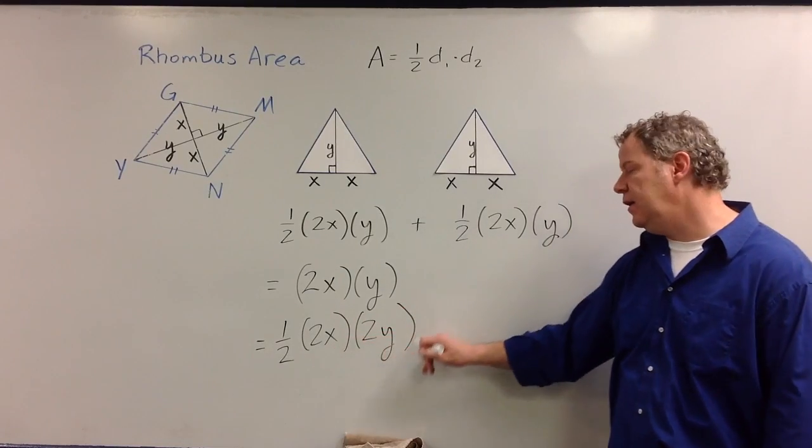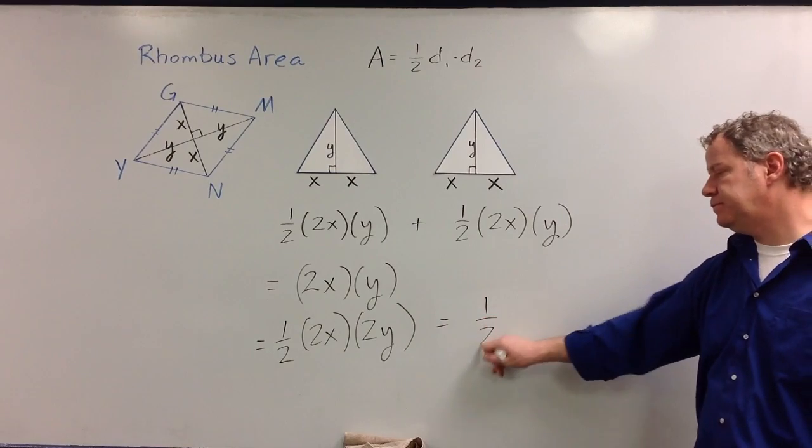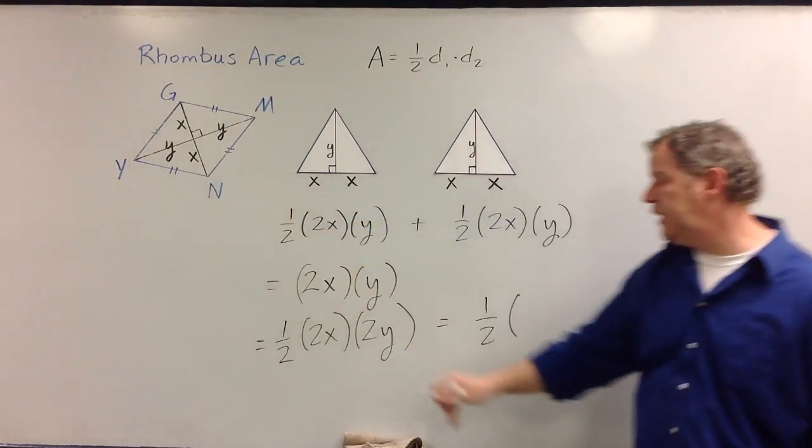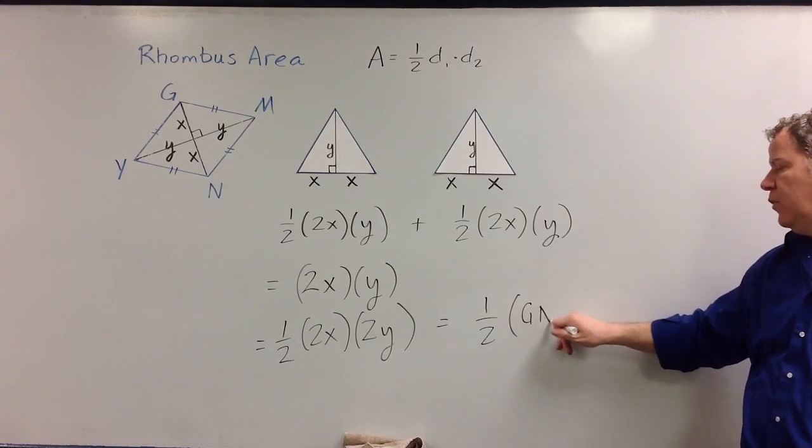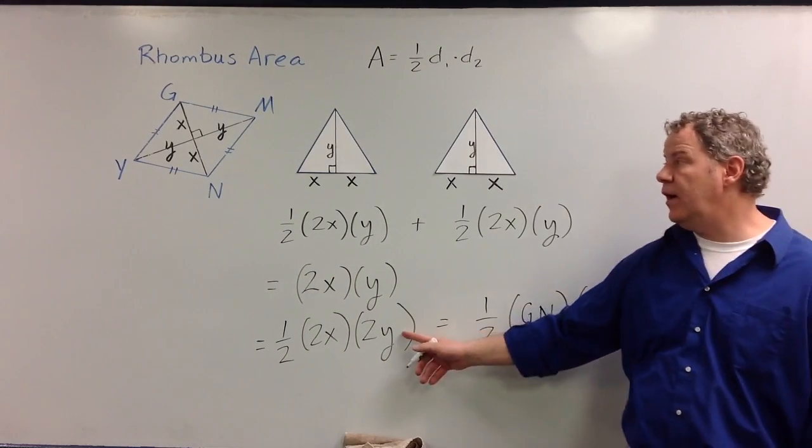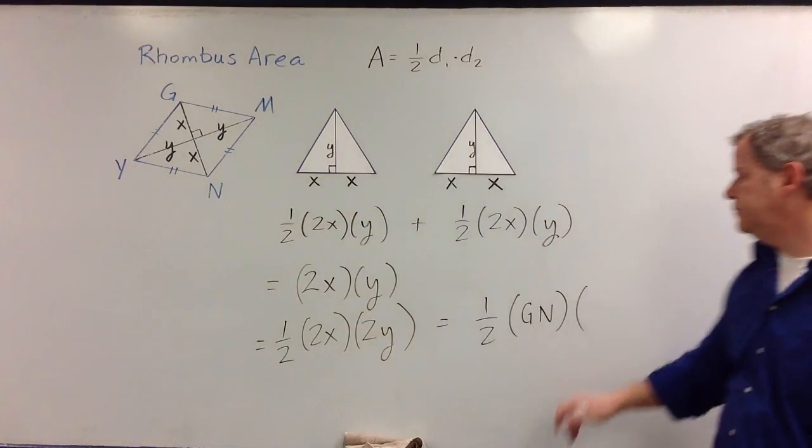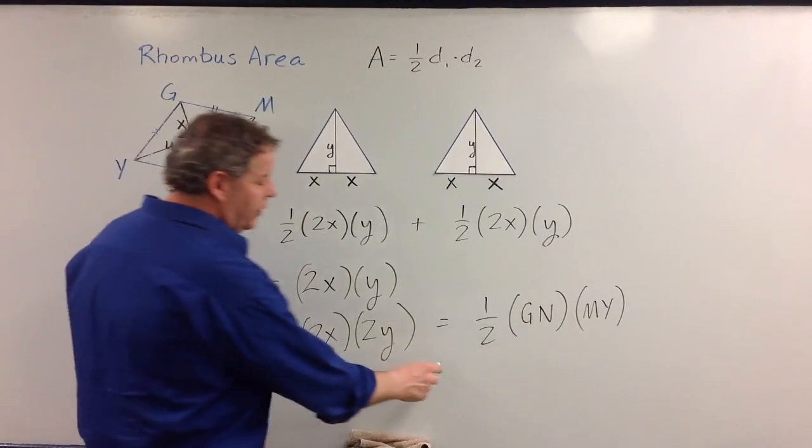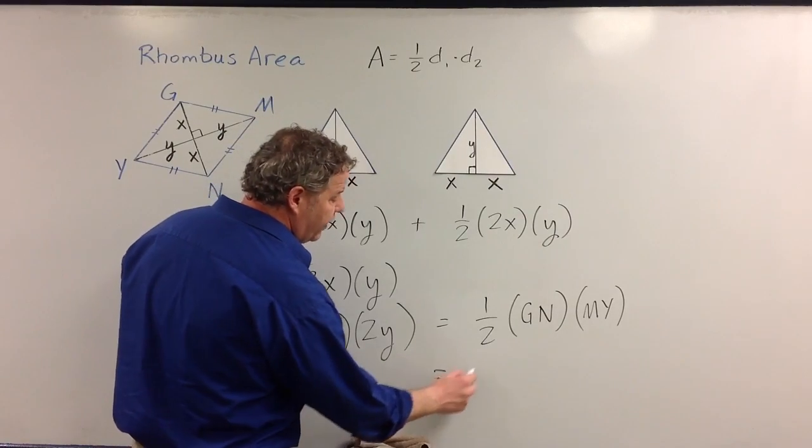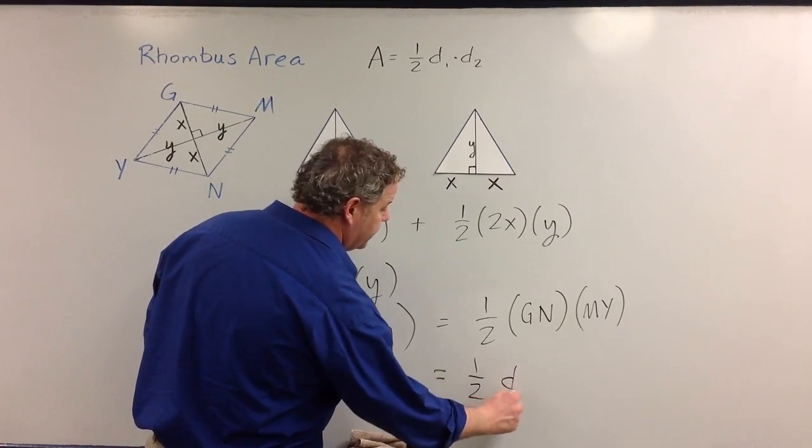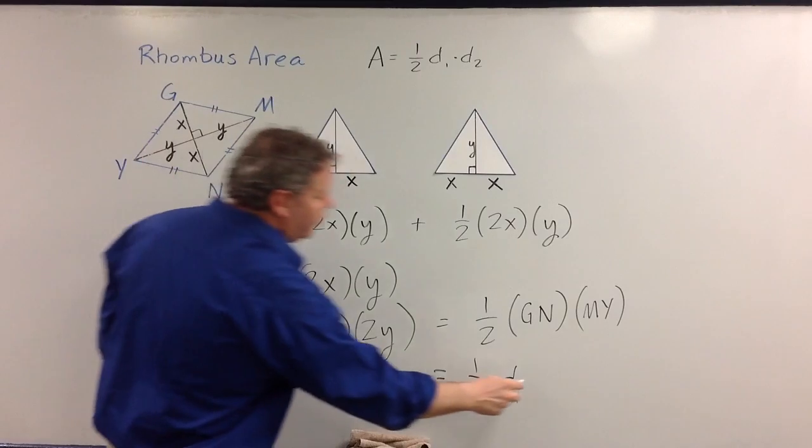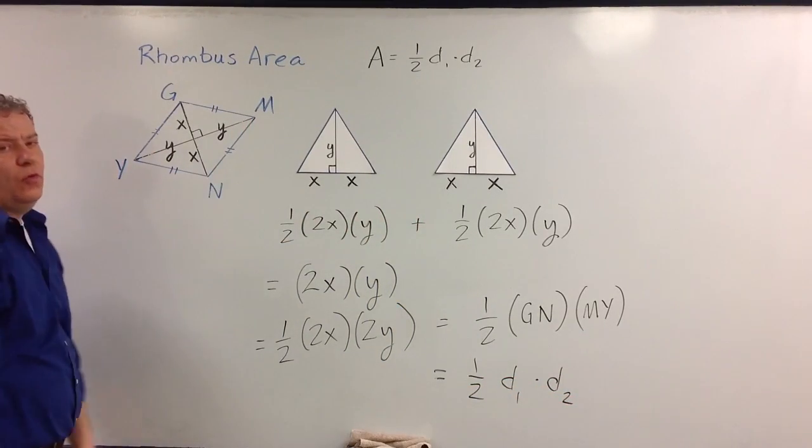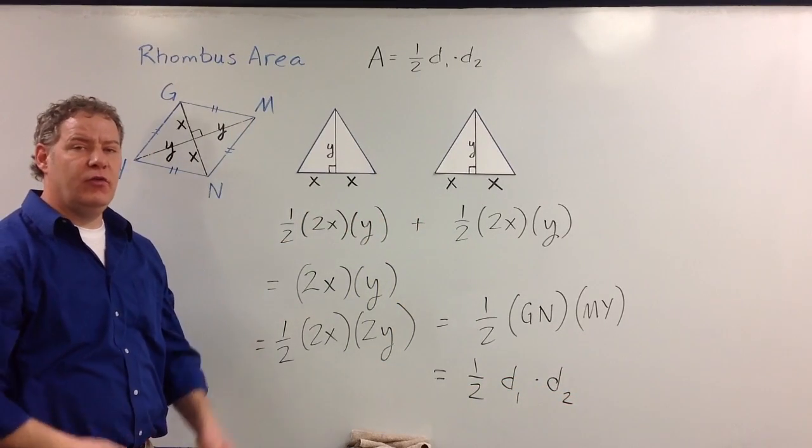Well, half of 2x and 2y is really, where did the 2x come from? This distance across here, which was the distance from G to N. And GN is one of the diagonals. And what is 2y? It's the other diagonal. So really what we have here is one half of diagonal one, and that's GN times diagonal two, which is NY, which is where we get the formula for the area of a rhombus.